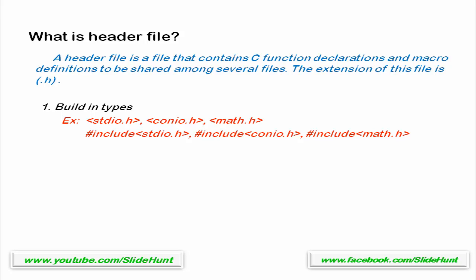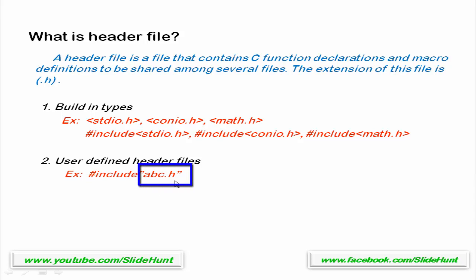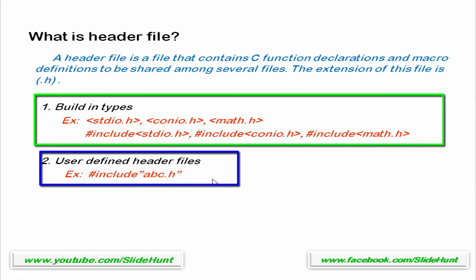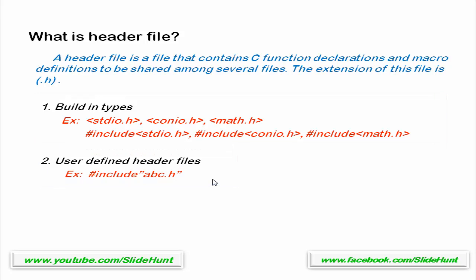I have already discussed preprocessor directives in my other videos, so I am not going to go into details here. To watch those videos, please check my video description. The other type of header files are user-defined header files. To include a user-defined header file, we use the #include preprocessor and write the file name within double quotes. For example, abc.h is a user-defined header file. In compiler-defined header files you write the file name inside angle brackets, but for user-defined header files you write the file name inside double quotes.